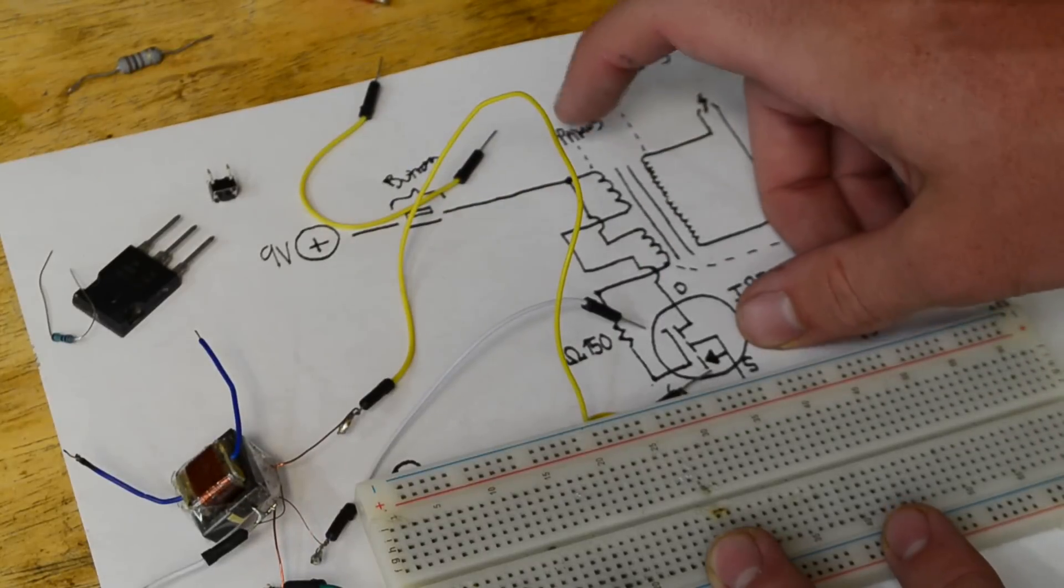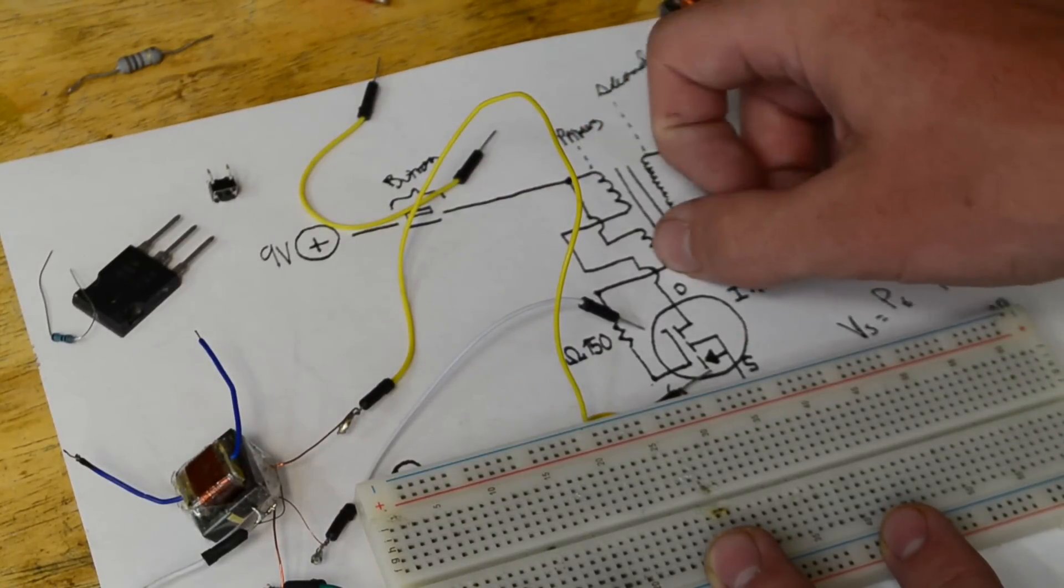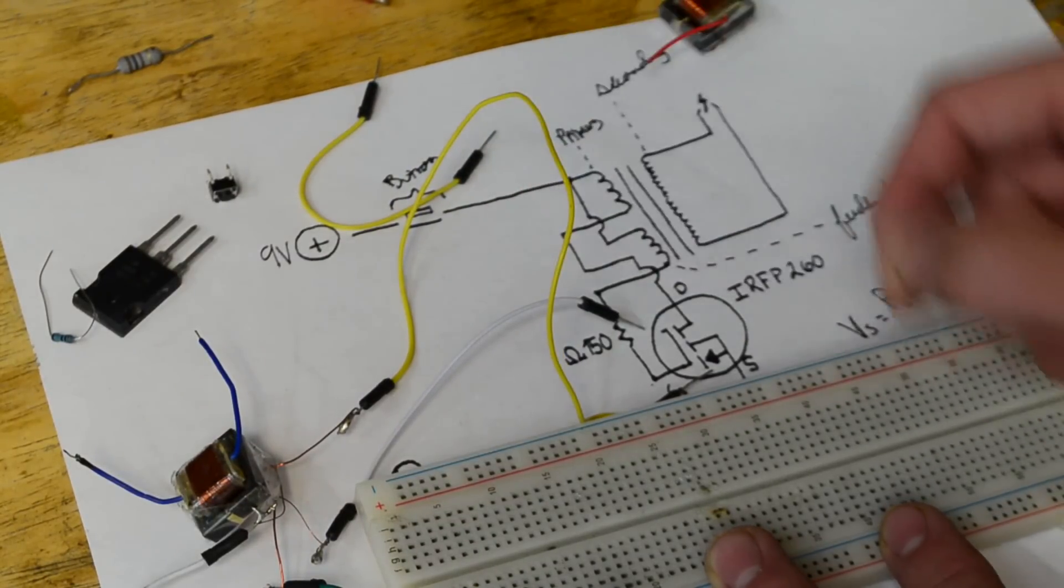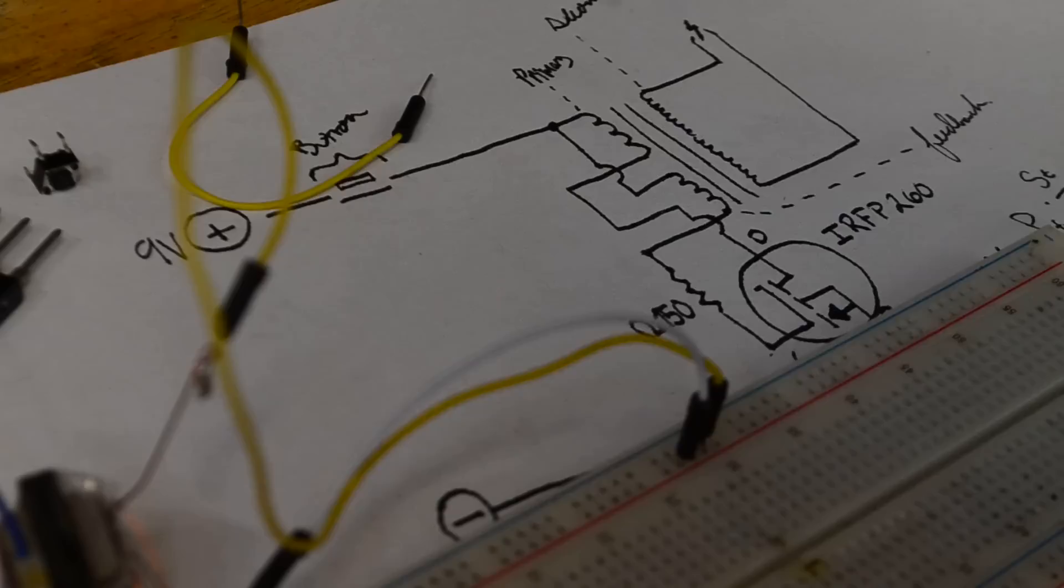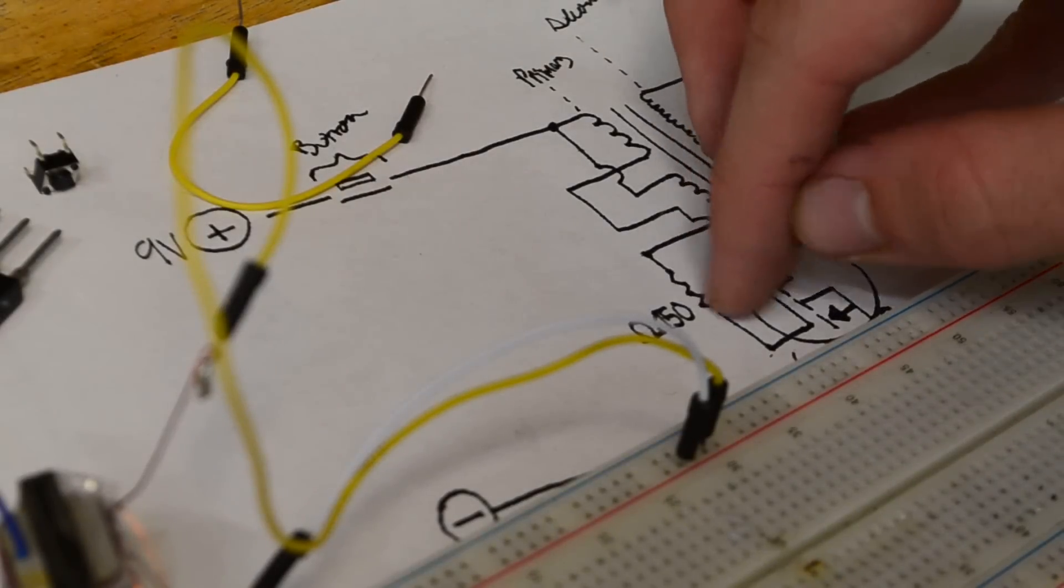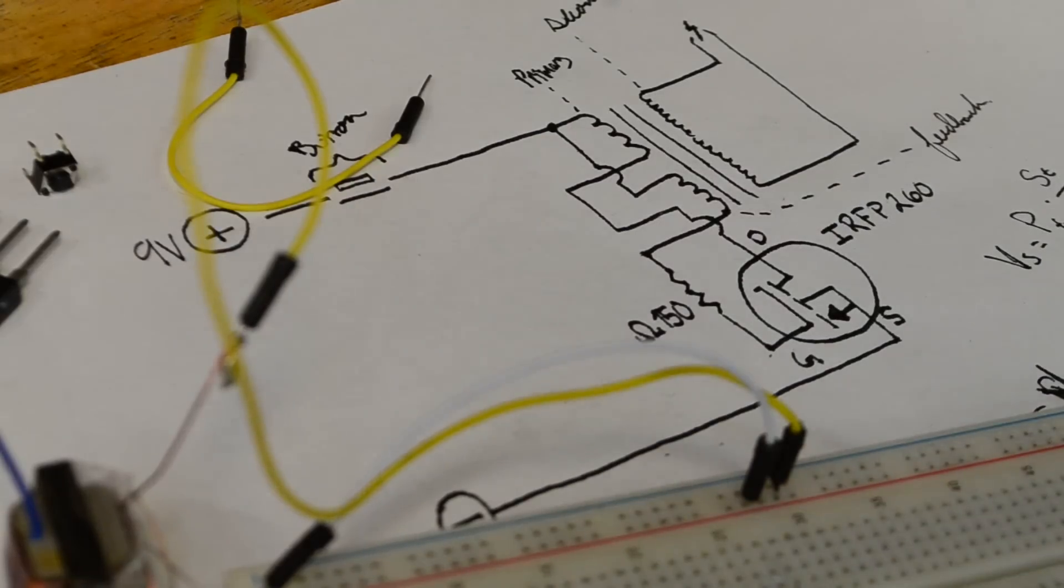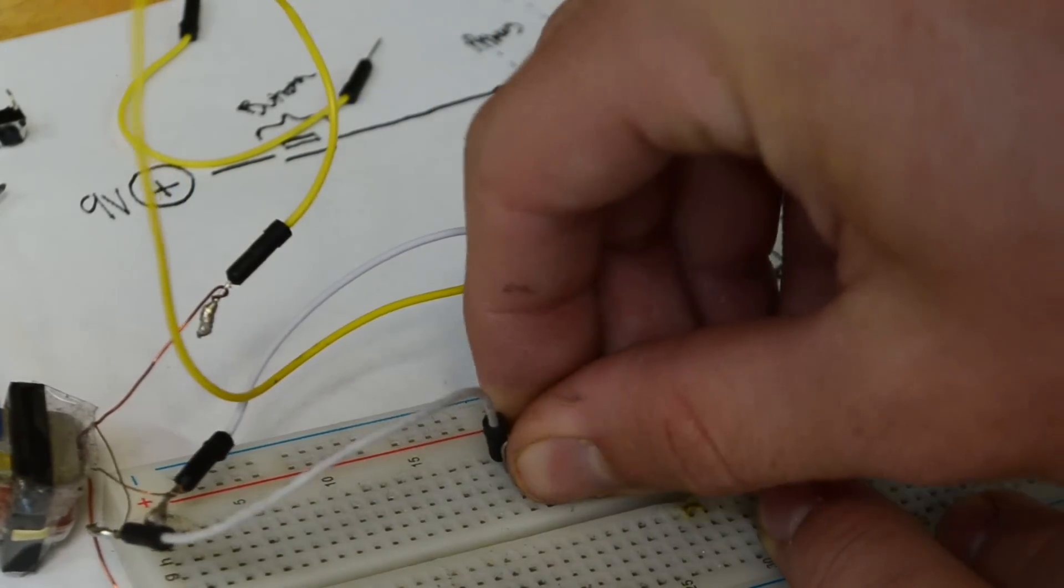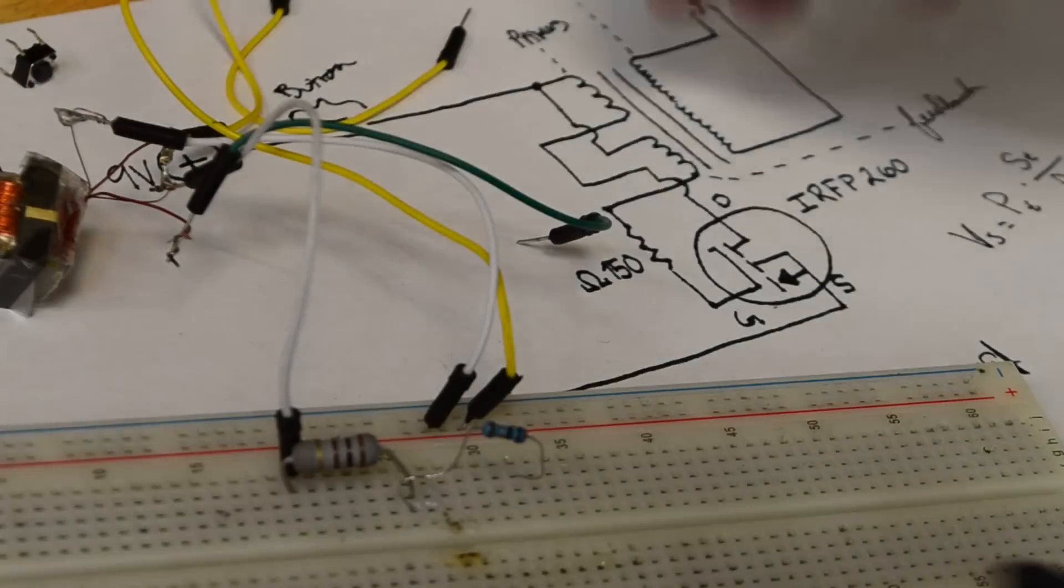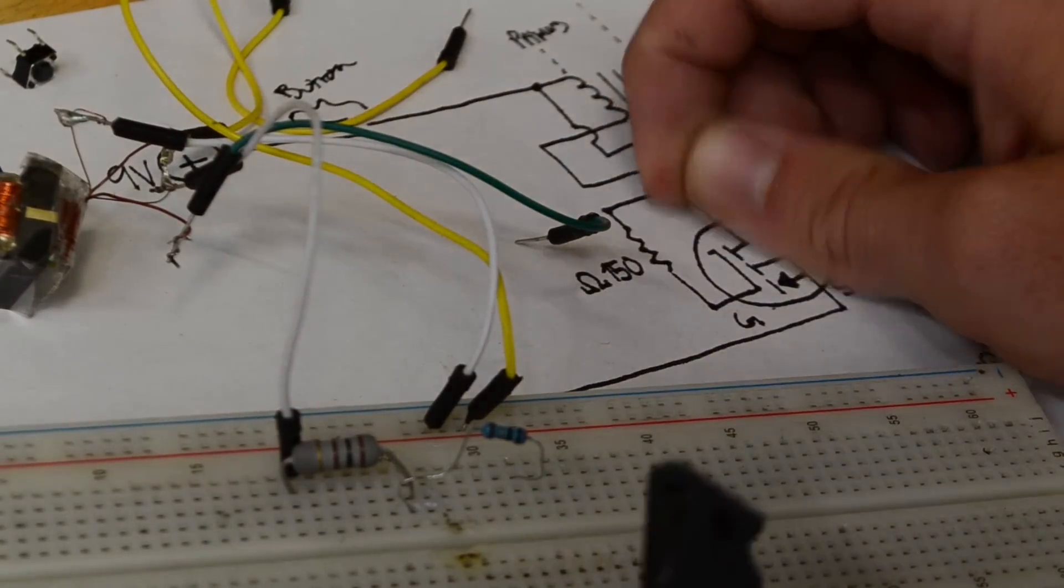As per the circuit, one end of the primary coil and one end of the feedback coil are both connected to voltage positive. I'll begin by inserting the primary coil and feedback coil into this positive rail over here. Next we can see the feedback coil is connected through this 150-ohm resistor to the gate of our MOSFET.